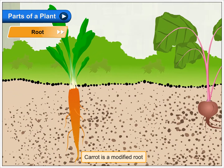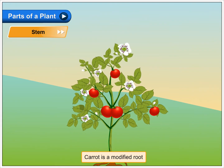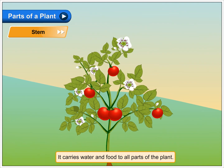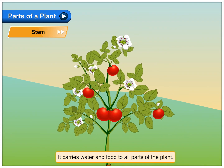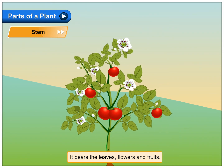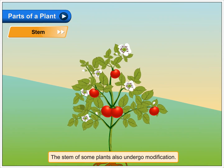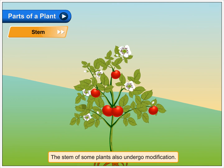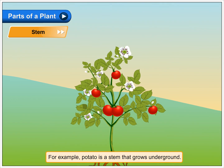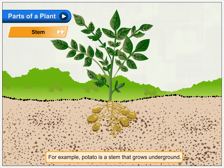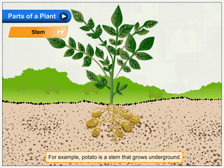Carrot is a modified root. The stem carries water and food to all parts of the plant. It bears the leaves, flowers, and fruits. The stem of some plants also undergoes modification. For example, potato is a stem that grows underground.